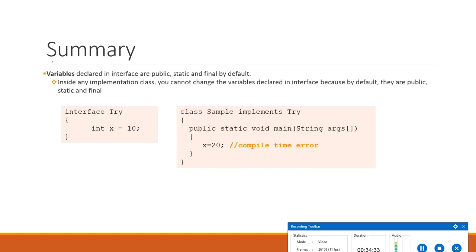Variables declared in interfaces are public, static, and final by default. Inside the implementing class you cannot change the variables declared in the interface because they are final. For example, interface Try has integer x initialized to 10. Class Sample implements Try. In the main class, if you try to change the value of x, the compiler will throw an error because the variable is static and final.